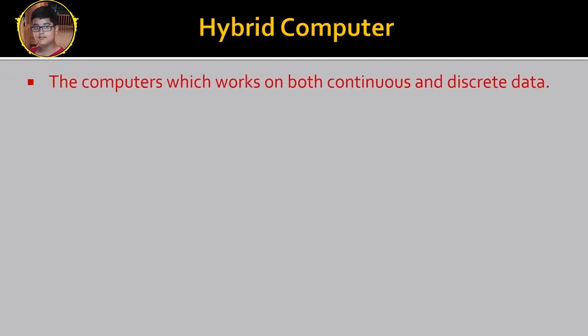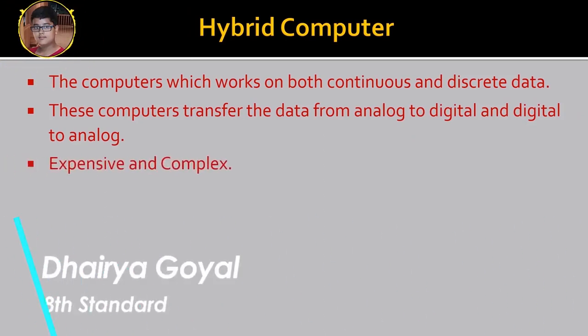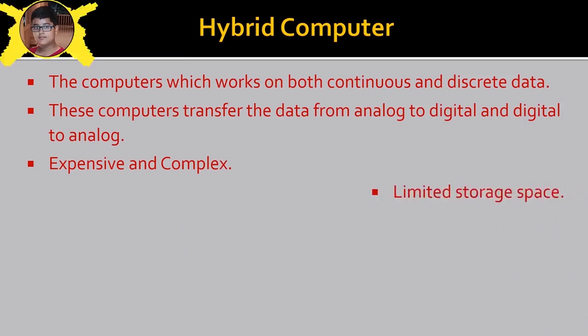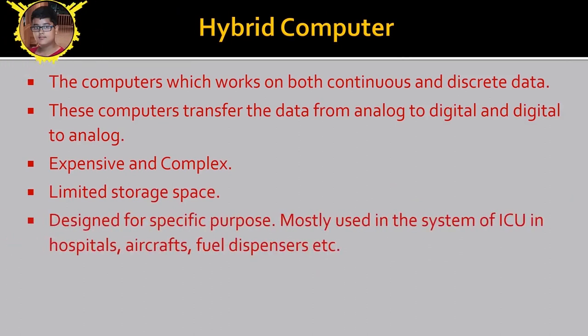The third type of computer is Hybrid Computer. Now, a very interesting fact is that Hybrid Computer Work on both Continuous and Discrete Data. That means it has both Analog and Digital System. These Computers transfer data from Analog to Digital and Digital to Analog. These are expensive and complex. They have limited storage space. These are used for specific purposes.